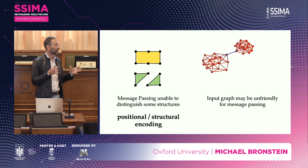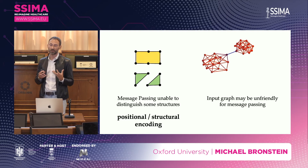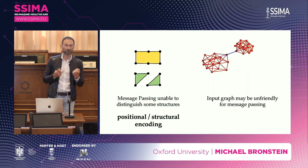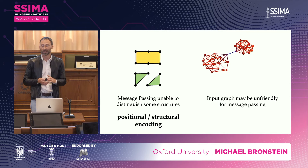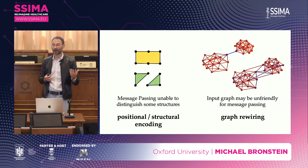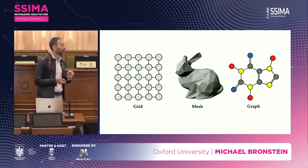A frequent issue with graph neural networks is that the graph plays a dual role: it's part of the data (like a molecule fully describing a compound's structure) but simultaneously a computational device over which you propagate information. Some graphs are very inefficient for propagation — if there is a bottleneck, a single edge through which all information from one part of the graph must pass, it creates what is called the over-squashing effect. The standard approach to deal with it is graph rewiring: changing the graph used for message passing to make it more amenable to this procedure.